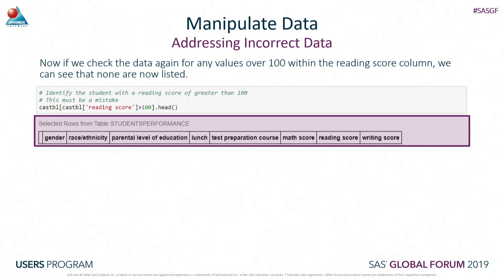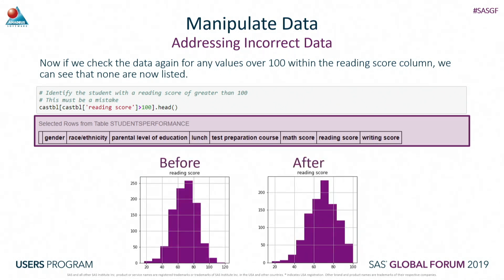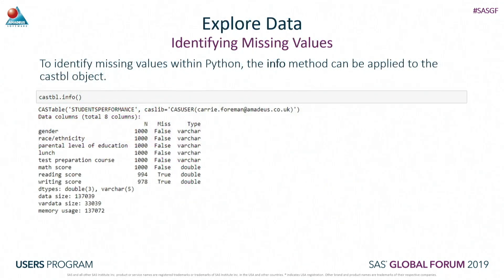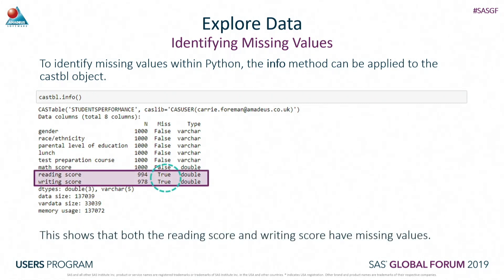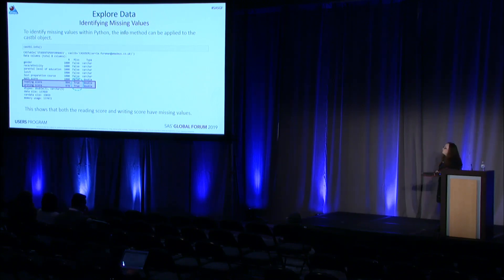We've just replaced that value with a missing, so we know there are now missing values within our data set. If I want to identify any columns that have missing values, I can use the info method. The info method gives me information on the column names, the number of non-null values, and the data types. Looking at this, we were expecting the reading score to have at least one missing value, but it turns out there must be more in there as well. Also, the writing score seems to have missing values too.